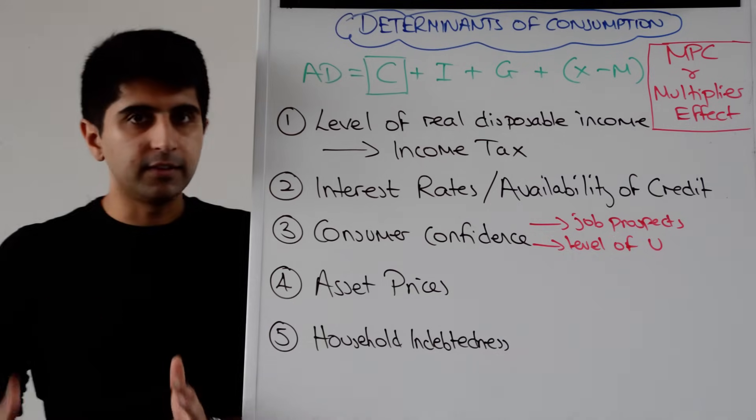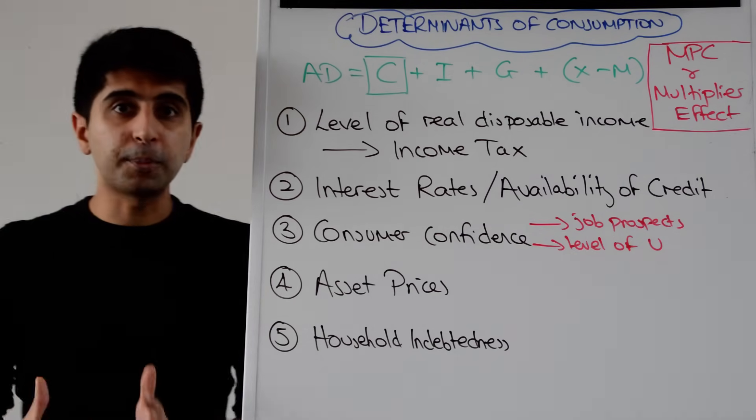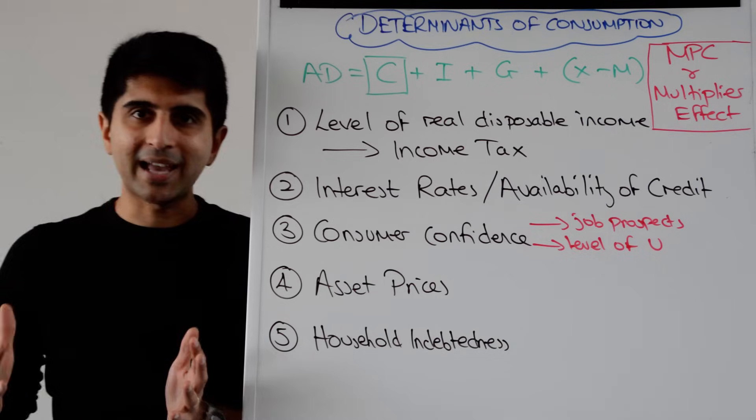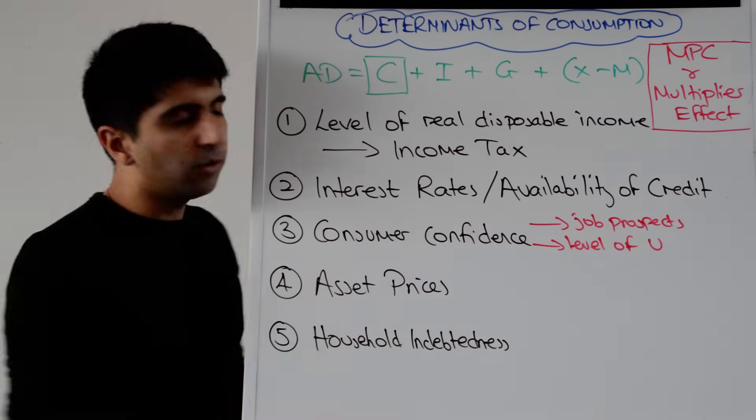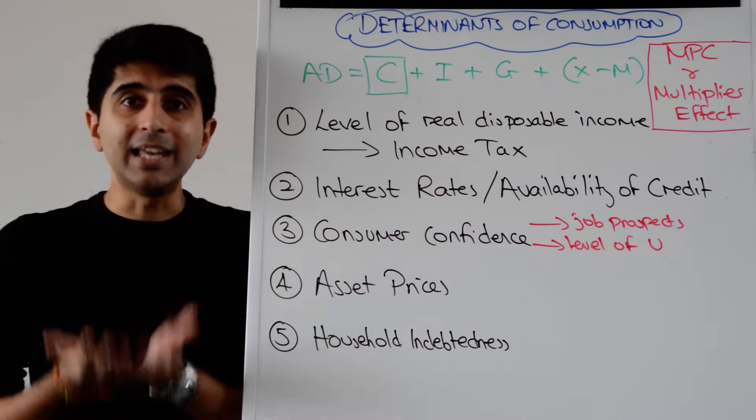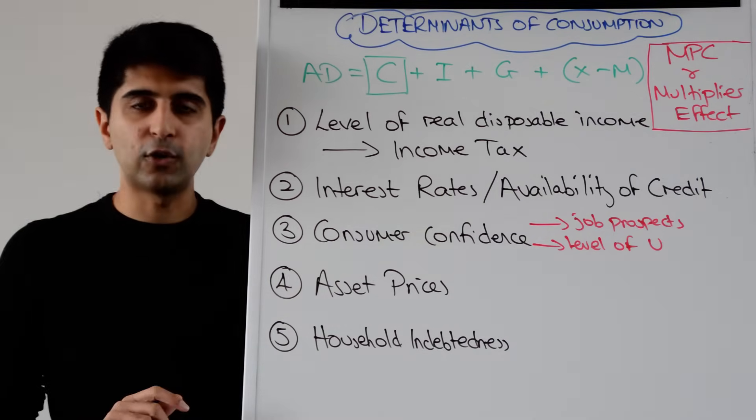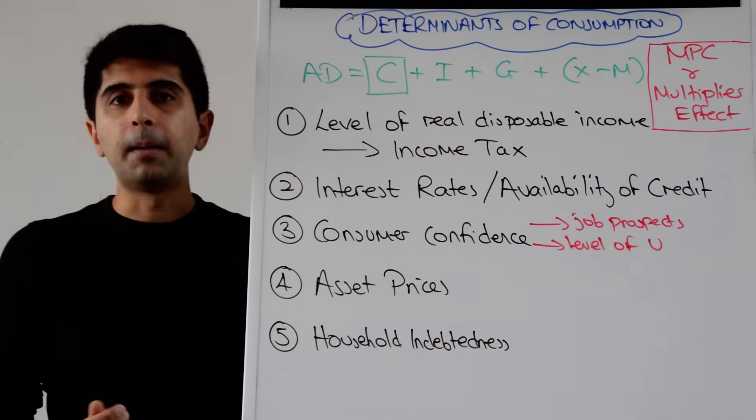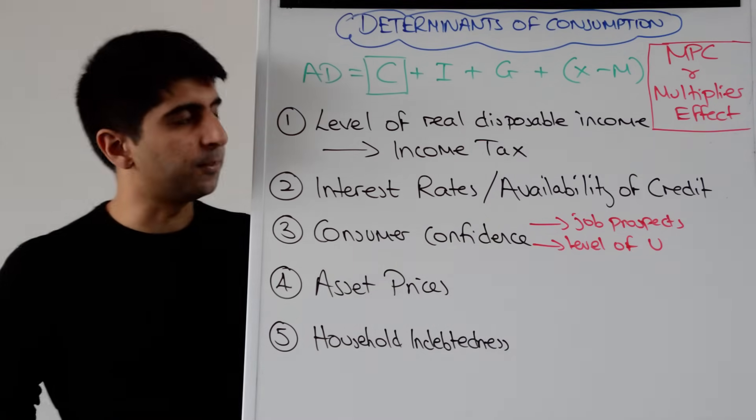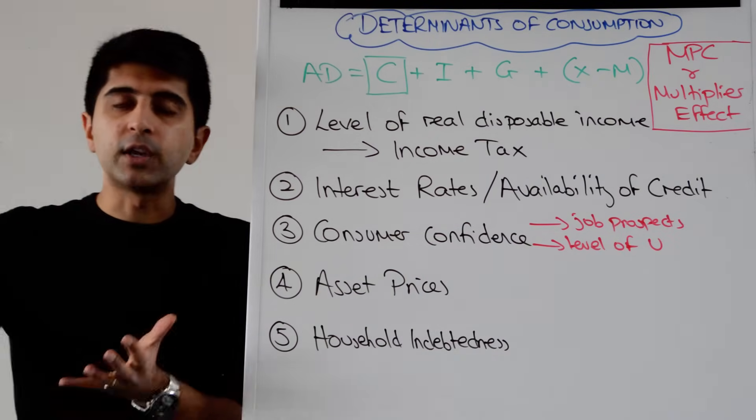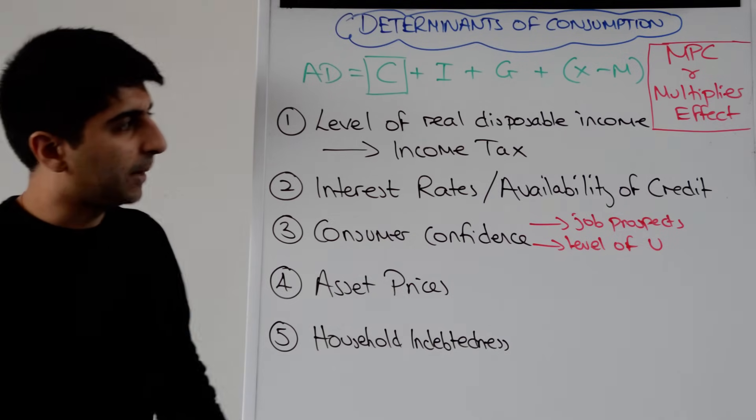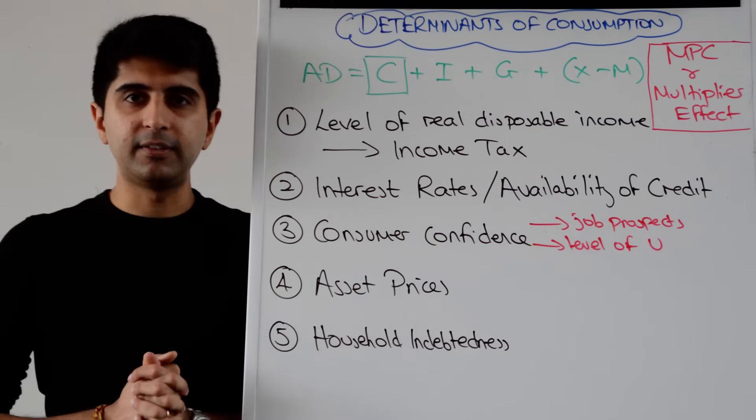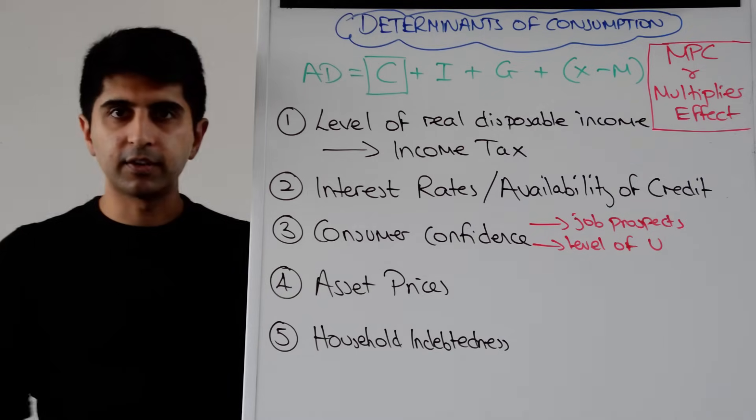So what factors can affect consumption independent of the price level? Well, the level of real disposable income where real means adjusted for inflation and disposable income is income left after taxes and national insurance have been paid. So one reason why disposable income can increase is maybe if income taxes have been cut in the economy. So cuts in the marginal rate of income tax or increases in the tax-free allowance which is the level of income you're allowed to earn before taxes are paid. So if you increase the tax-free allowance or if you cut the marginal rate of income tax that is going to increase the level of real disposable income which will therefore increase the marginal propensity to consume and therefore increase the level of consumption in the economy.